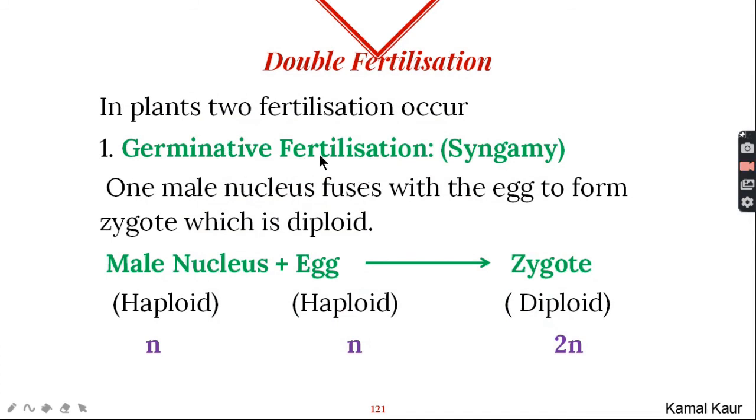First is germinative fertilization also called syngamy. Here one haploid male nucleus fuses with haploid egg to form a zygote which has two sets of chromosomes or it is diploid.